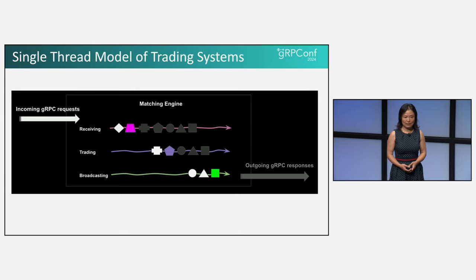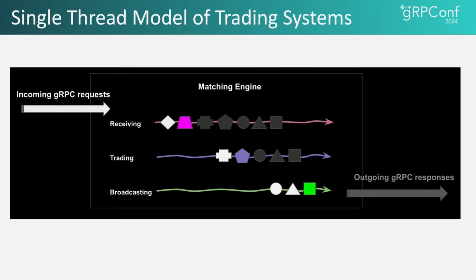Beyond performance, ensuring the correctness of transaction execution is crucial for trading systems. While there are concurrent threads inside the matching engine handling various tasks to guarantee correctness, each task must adhere to a strict single-thread model during execution. This ensures that all transactions are executed sequentially and without race conditions. At the same time, it also requires each task to be designed to execute with maximum efficiency: minimize CPU usage, pre-allocate memory whenever possible, and avoid blocking situations.